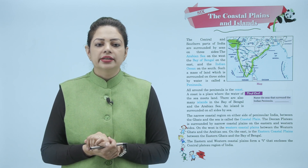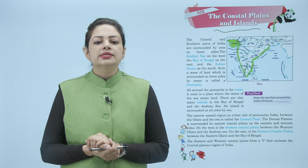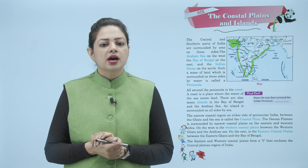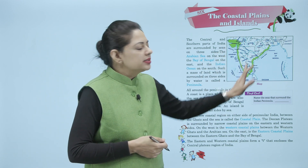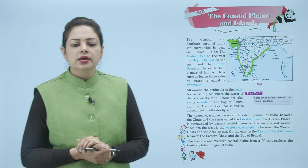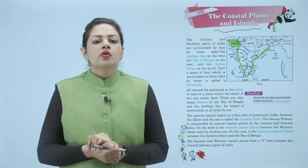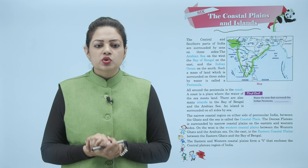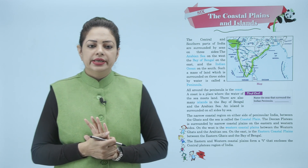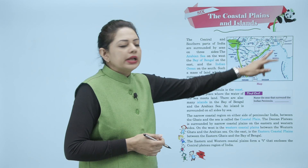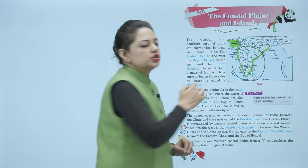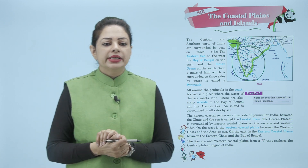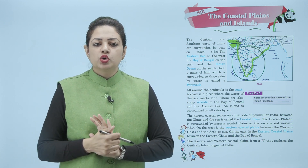On the west is the western coastal plain between the western ghats and the Arabian Sea. On the east is the eastern coastal plain between the eastern ghats and the Bay of Bengal. The eastern and western coastal plains form a V that encloses the central plateau region of India. Western aur eastern part ek V ki shape banata hai, aur yeh jo shape hai, is landmass ko naam diya gaya hai central plateau region of India.